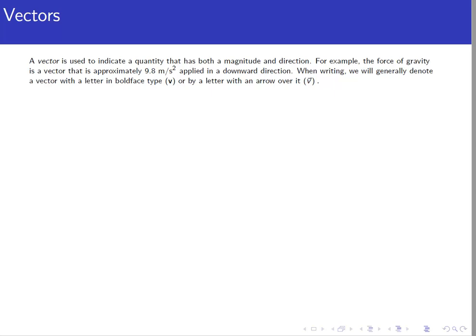In this video, we're going to introduce vectors. We use vectors when we want to indicate a quantity that has both a magnitude and a direction. For example, gravity is typically denoted with a vector because it has a magnitude — the acceleration due to gravity is 9.8 meters per second squared — and gravity pulls things toward the center of the Earth, so it's applied in a downward direction.